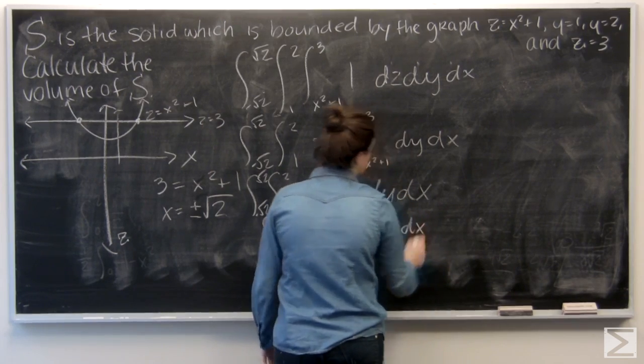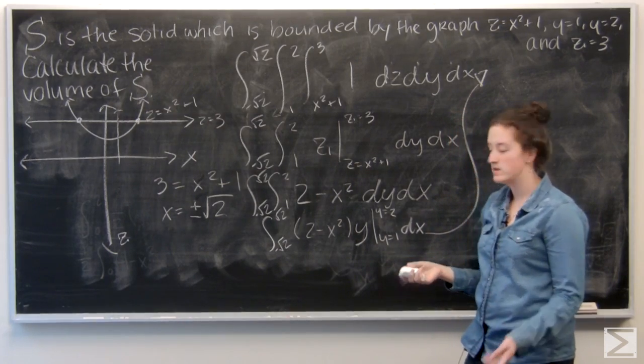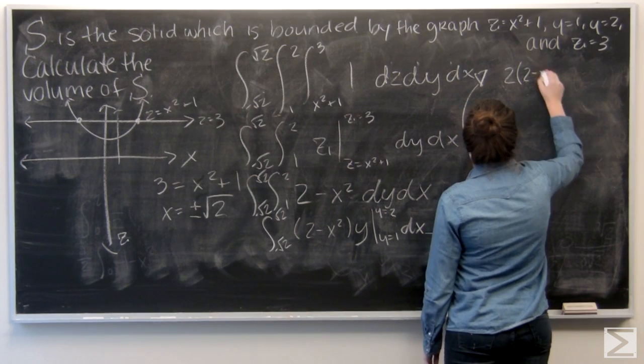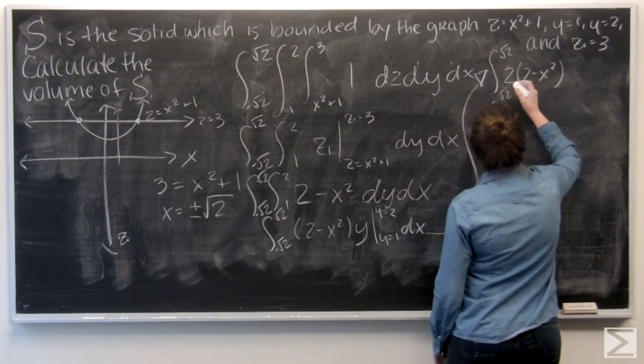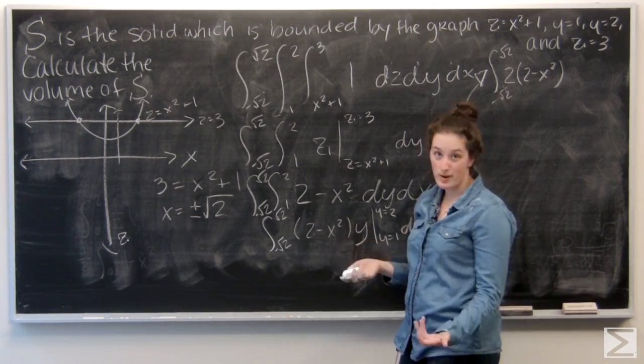dx is still tagging along. First I'm going to plug in 2 for y, so 2 times 2 minus x squared. And now I want to plug in 1 for y, so that's just 2 minus x squared.